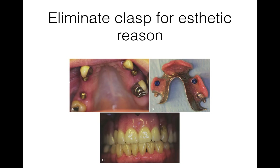The third condition is to eliminate the clasp for aesthetic reasons. We know that we have to use a direct retainer like a clasp, wrought wire clasp, or I-bar on abutment teeth. For example, this is a Kennedy class 3 modification 2 case. Basically, we have to clasp on the molar and also clasp on the canine. Even if we use an I-bar, when patients smile, you can still see the clasp. So we look for alternative options that don't require a clasp in the front. That's why we can use an implant to act as the retention component — eventually you don't need a clasp in the front.